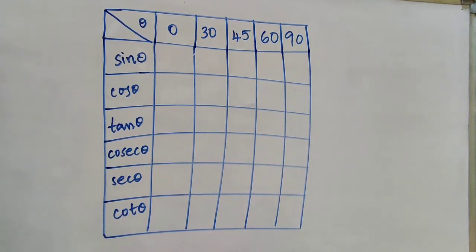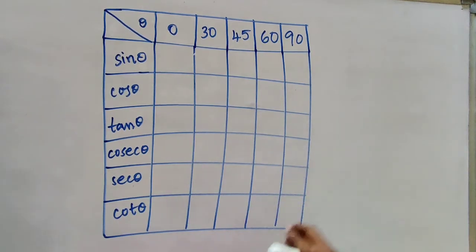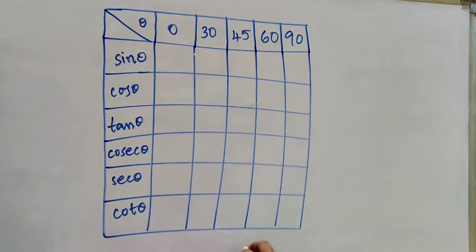I will show you the first five angles. The first five angles are 0, 30 degrees, 45, 60, and 90 degrees.